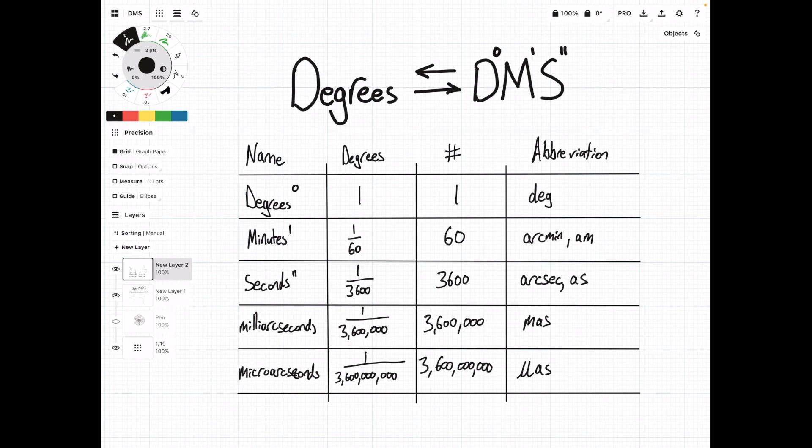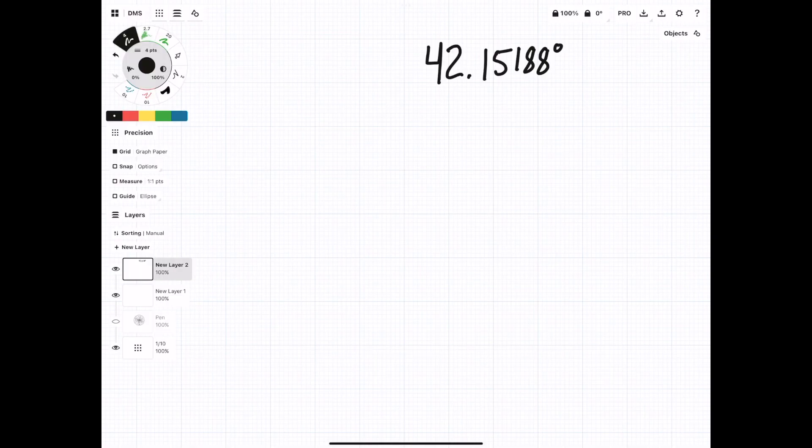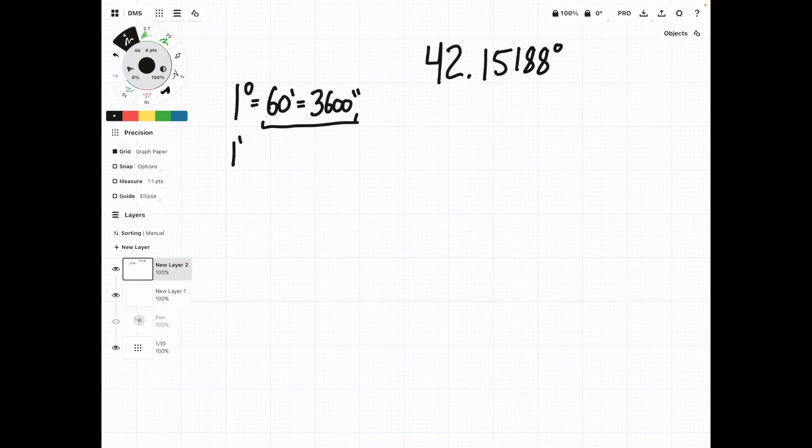In the next section, we're going to look at some practice problems and learn how to convert between degrees to degrees, minutes, and seconds. Now let's convert this degree value to degrees, minutes, and seconds. From our table before, we know that 1 degree is equal to 60 minutes. And this is also equal to 3,600 seconds. We can basically take this part of this equation and figure out that 1 minute is equal to 60 seconds.